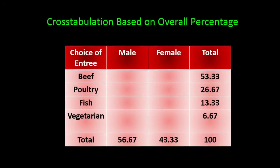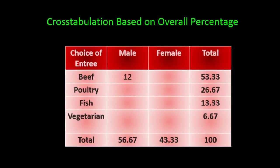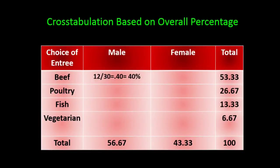So here we have the beginnings of a cross tabulation based on overall percentages. Now let's fill in the rest of the cells — there are still eight cells that need to be filled. Let's start with the intersection of beef and male. How many people were both male and ordered beef? Going back to the original table, 12 males ordered beef. To turn that into an overall percentage, we divide 12 by 30 and we get 0.4, or 40 percent.